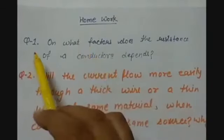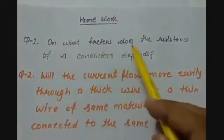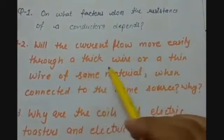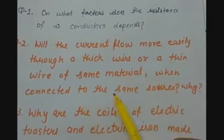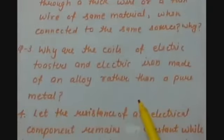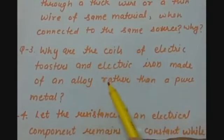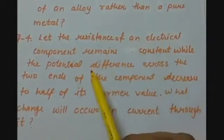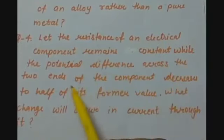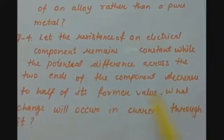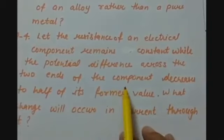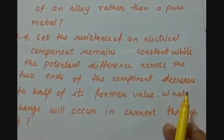The homework for today's lecture is: Question 1 — On what factors does the resistance of a conductor depend? Question 2 — Will current flow more easily through a thick wire or a thin wire of the same material when connected to the same source, and why? Question 3 — Why are the coils of electric toaster and electric iron made up of alloys rather than a pure metal? Question 4 — Let the resistance of an electrical component remain constant while the potential difference across the two ends decreases to half of its former value. What change will occur in the current through it? Now let us see the homework solutions of lecture number 2.